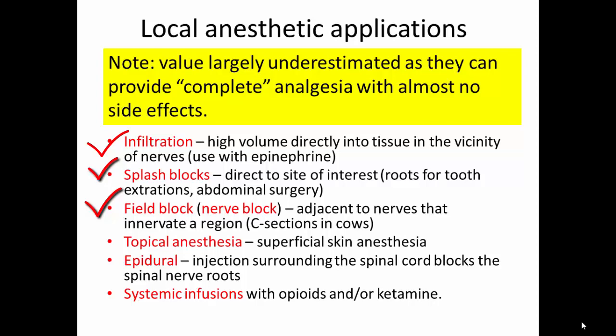With topical anesthesia, the drug must be capable of penetrating through an open wound, skin, or mucous membrane — such as lidocaine creams used prior to placing an IV catheter. Epidural anesthesia involves injection of local anesthetics in the space surrounding the spinal cord, acting on spinal nerve roots, with some drug potentially diffusing into the spinal cord itself. Finally, local anesthetics can be used for systemic infusions, usually combined with other analgesic drugs like opioids or ketamine.